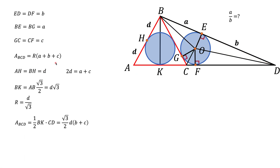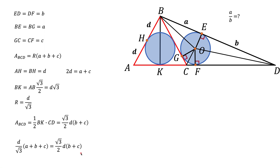Previously we looked at the area of triangle BCD using the inscribed circle. Now let's look at the area of the same triangle in the normal way: half the altitude, which is also BK, times the base CD. CD equals B + C. Applying that gives us another formula for the area of BCD. This area must equal the expression derived using the inscribed circle, so we equate them and substitute the value for the radius using the earlier formula.